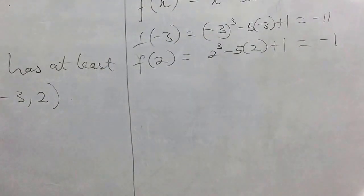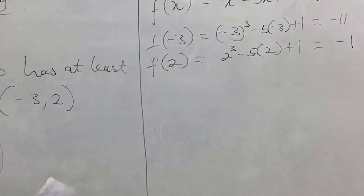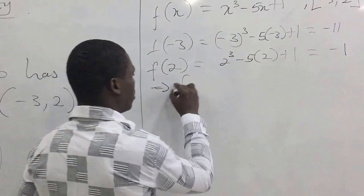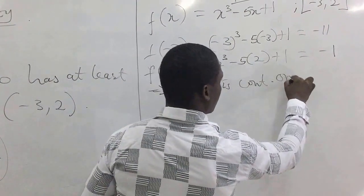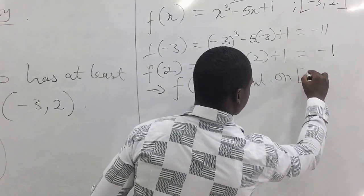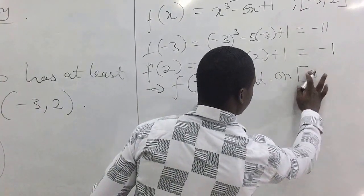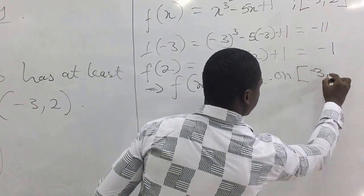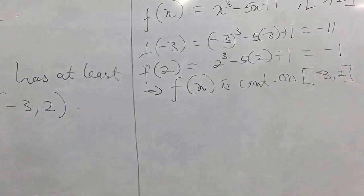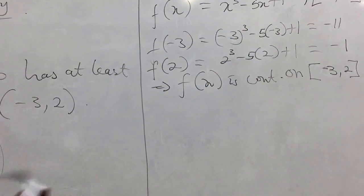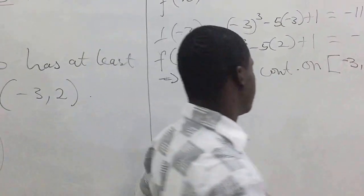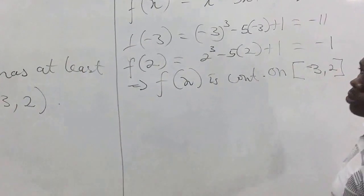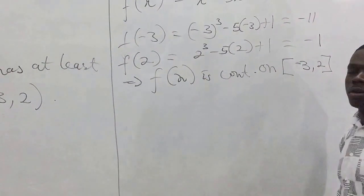So we see that it is continuous within the interval, and we say that f(x) is continuous on the closed interval [-3, 2]. Let's see the graph of this that gives us a better idea of when there exists solutions or we can find zeros, and more than one zero to this particular equation or function.